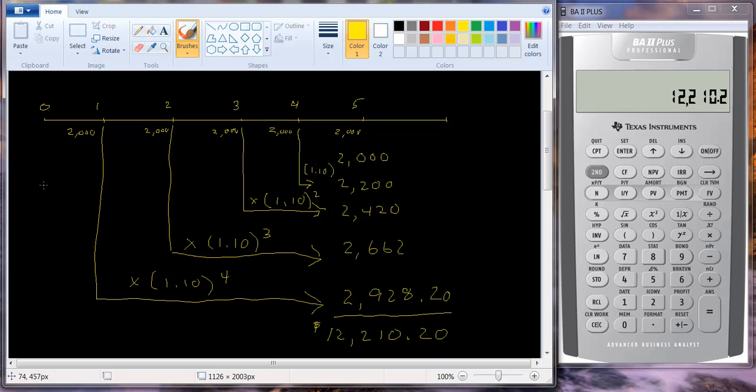To do present value, it's the opposite case. You just bring everything back to the same time period. As long as everything is in the same time period, at the same date, you can simply add them together. And so that's the basic premise of time value of money, future value, present value.